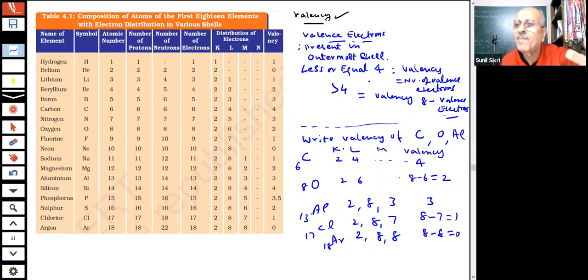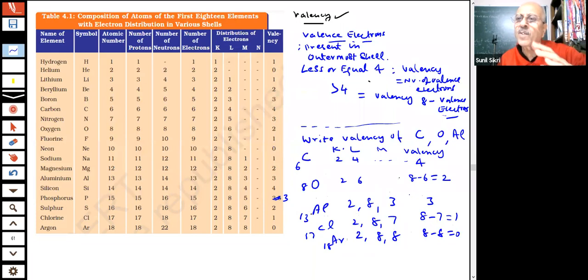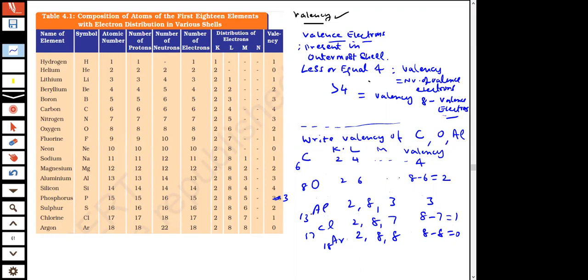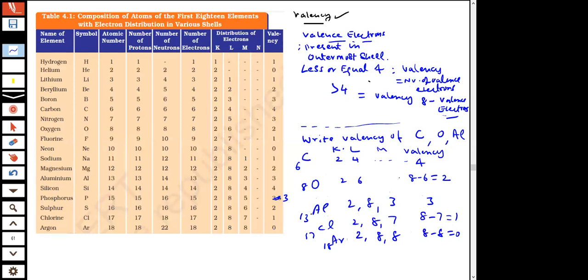A table from the NCERT book lists the valency of elements — our answers match the table. We are now confident in finding valency, number of protons, neutrons, and electrons when atomic number is given. Thank you for your brilliant answers, students. In the next class, we will cover isotopes, isobars, and solve more questions for the upcoming exams. Bye!